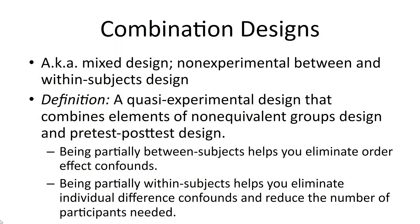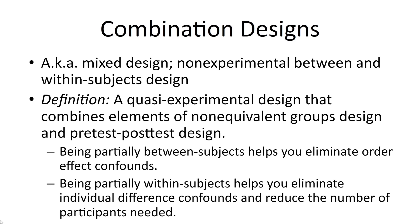When it comes to the non-equivalent group design or the pre-post design, they have their strengths and weaknesses. But you can also combine the two — what we'd often refer to as a combination design, sometimes called a mixed design or a non-experimental between-and-within groups design. This is a kind of quasi-experimental design that combines elements of the non-equivalent groups and the pre-test post-test. Being partially between-subjects helps eliminate order effect confounds, while being partially within-subjects helps eliminate individual difference confounds and reduces the number of participants needed.